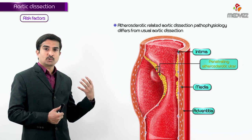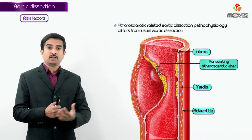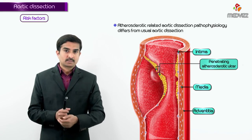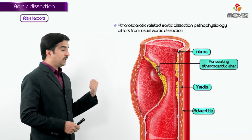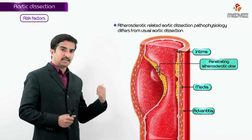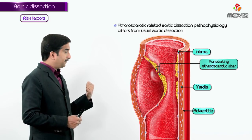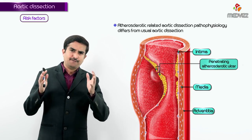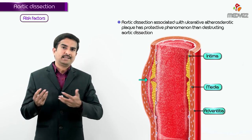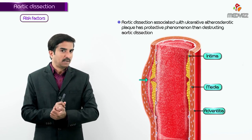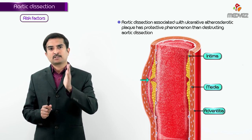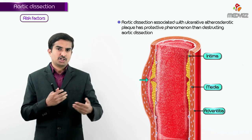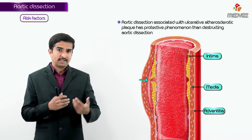However, in approximately 10 to 30 percent of individuals, so-called penetrating atherosclerotic ulcers may cause aortic dissection. Such atherosclerosis-related dissections represent a minority of cases and differ significantly in pathophysiology from classic aortic dissection. Overall, atherosclerosis has more of a protective phenomenon rather than a complicating one in aortic dissection.